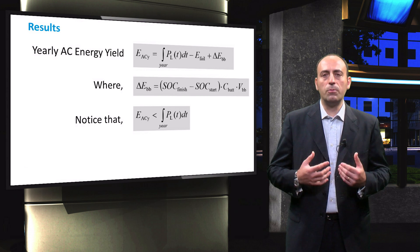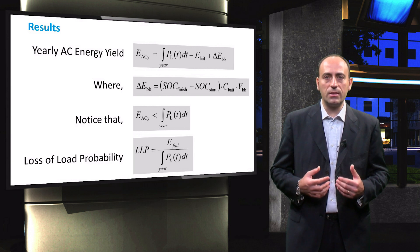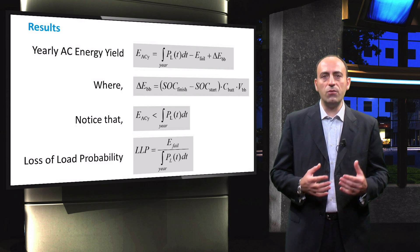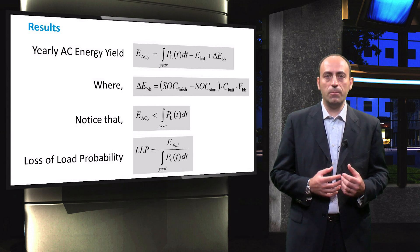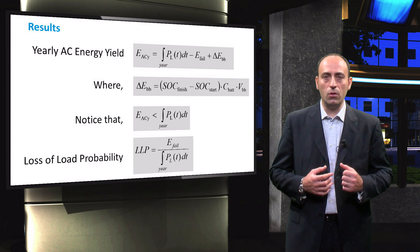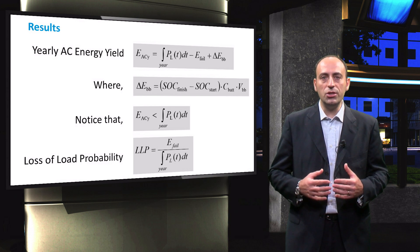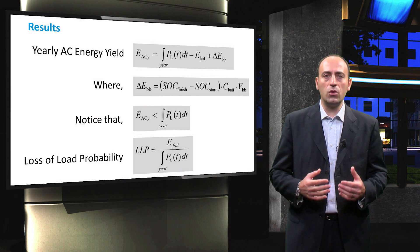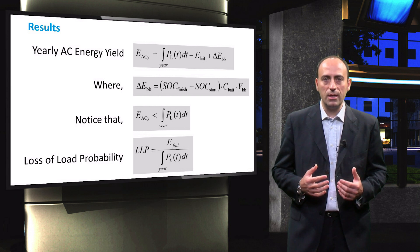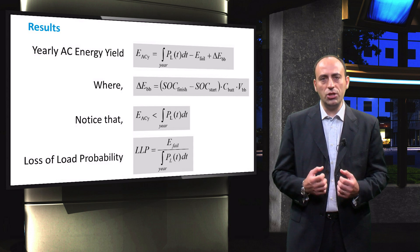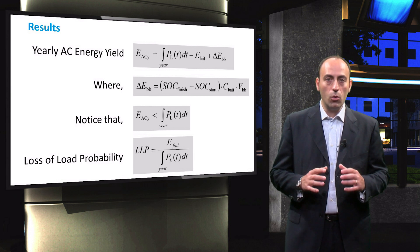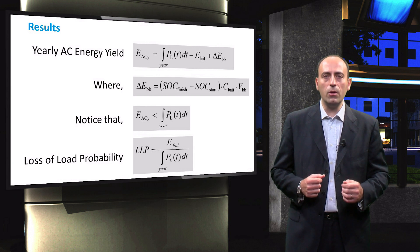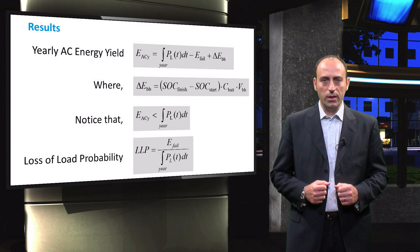Also, from the above expression, we can see that due to the fact that E-fail is a positive value, the AC energy delivered by the PV system is always lower than the total energy demanded by the loads. Thus, the loss of load probability for the PV system is calculated next. It is defined as the ratio between the energy that the PV system fails to deliver to the loads and the total energy requirement of the loads. By calculating the value of loss of load probability for the PV system, the level of autonomy achieved can be analyzed. Moreover, the PV system design can be evaluated before approval by looking at the calculated loss of load probability.